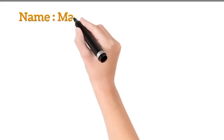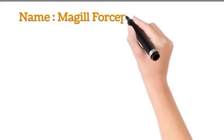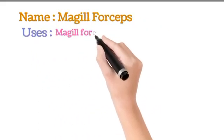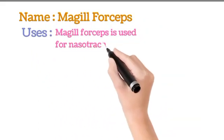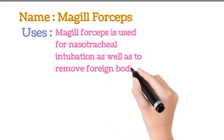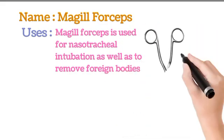Name: Magill forceps. Uses: Magill forceps are used for nasotracheal intubation as well as to remove foreign bodies.